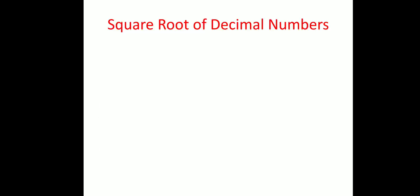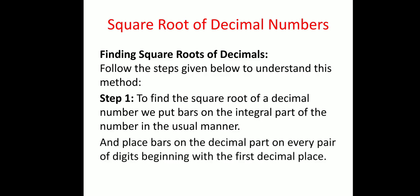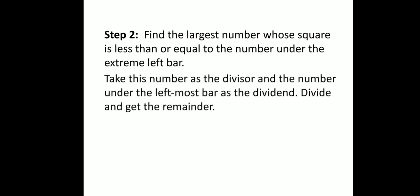Let us learn the steps to find out the square root of decimal numbers. The very first step is: to find the square root of a decimal number, we put bars on the integral part of the number in the usual manner and place bars on the decimal part on every pair of digits beginning with the first decimal place. Second step is: find the largest number whose square is less than or equal to the number under the extreme left bar. Take this number as the divisor and the number under the leftmost bar as the dividend. Divide and get the remainder.